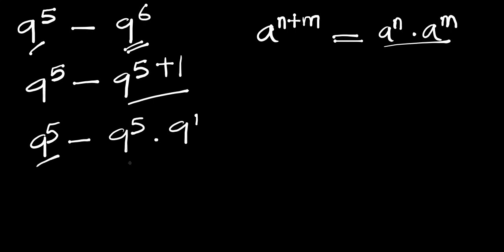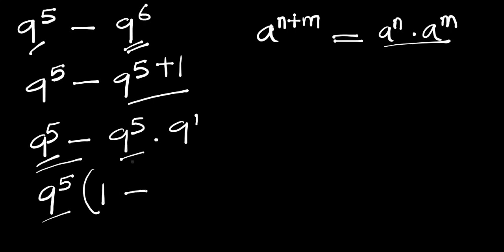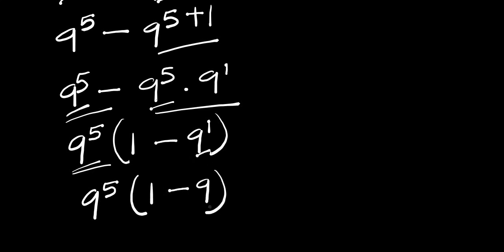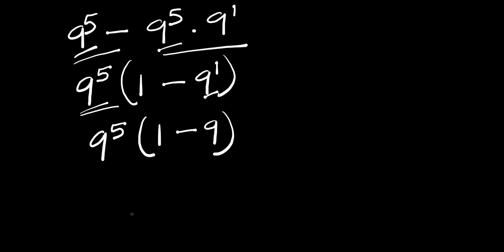We have 9 to the power of 5 in both terms, so we can factor that out. We get 9 to the power of 5 into: if you divide by 9 to the power of 5, you get 1 minus 9 to the power of 1. Since 9 to the power of 1 is 9, we have 9 to the power of 5 times 1 minus 9, which equals 9 to the power of 5 times negative 8.